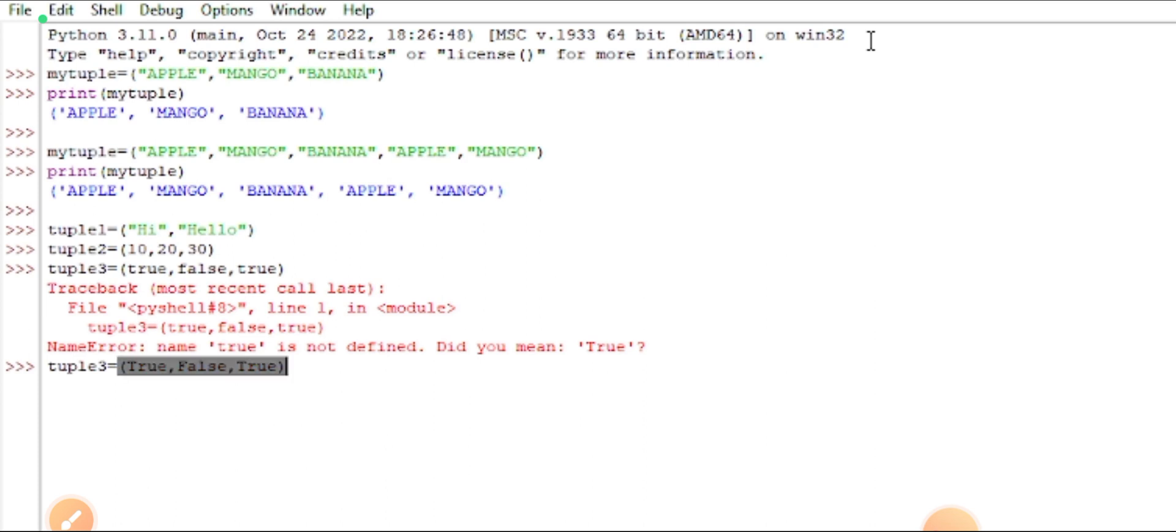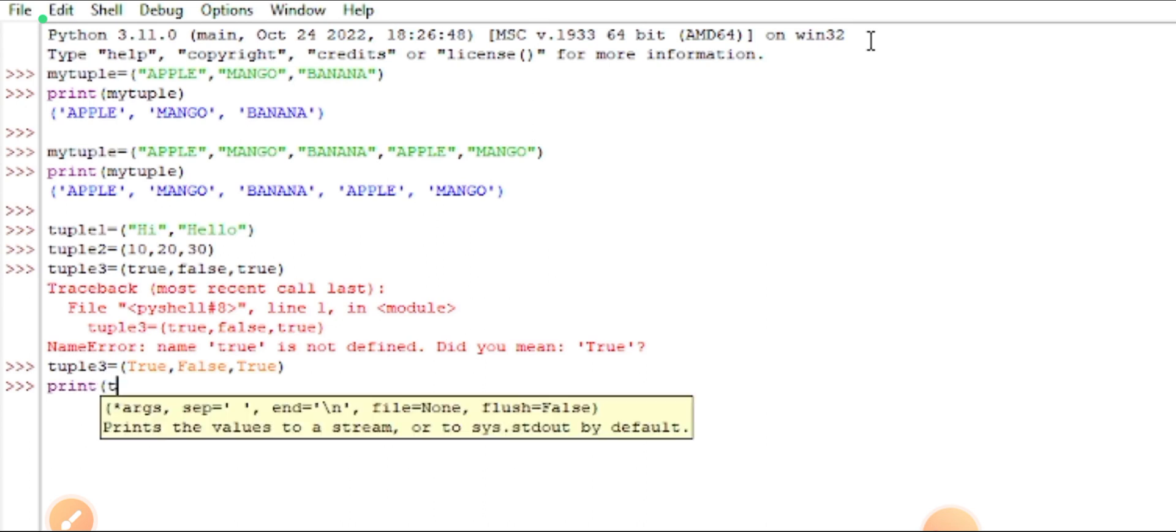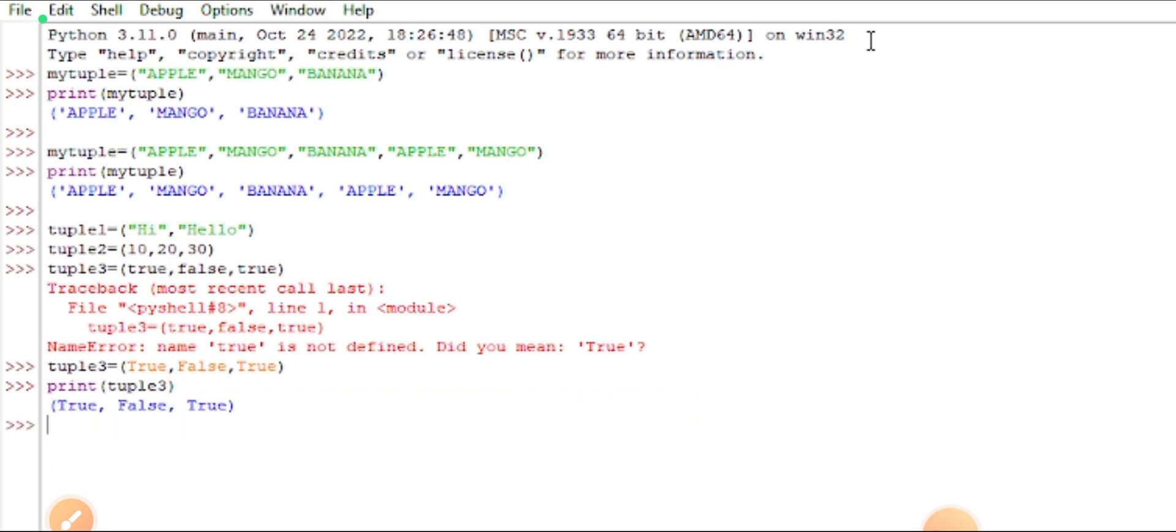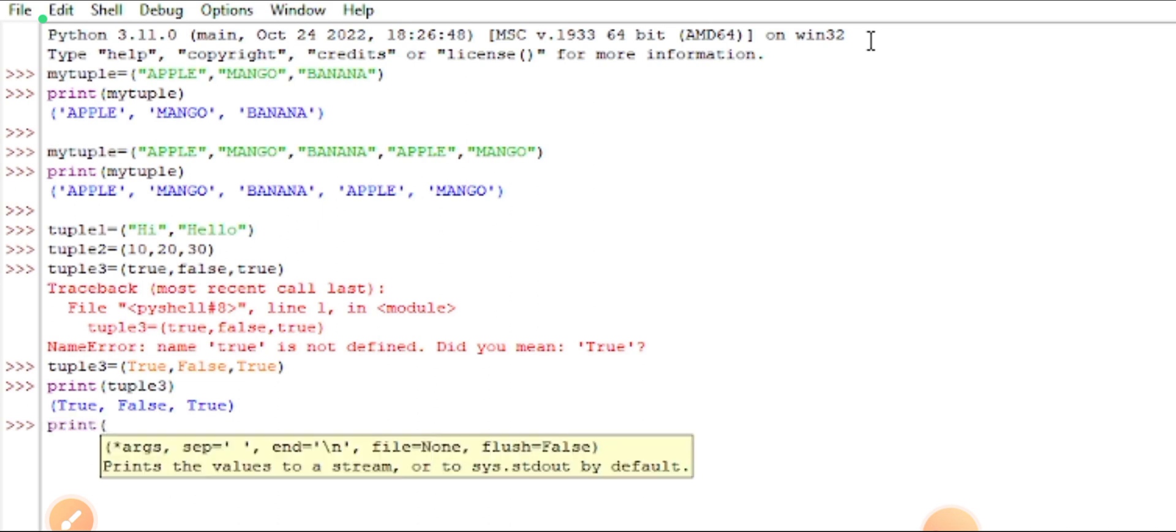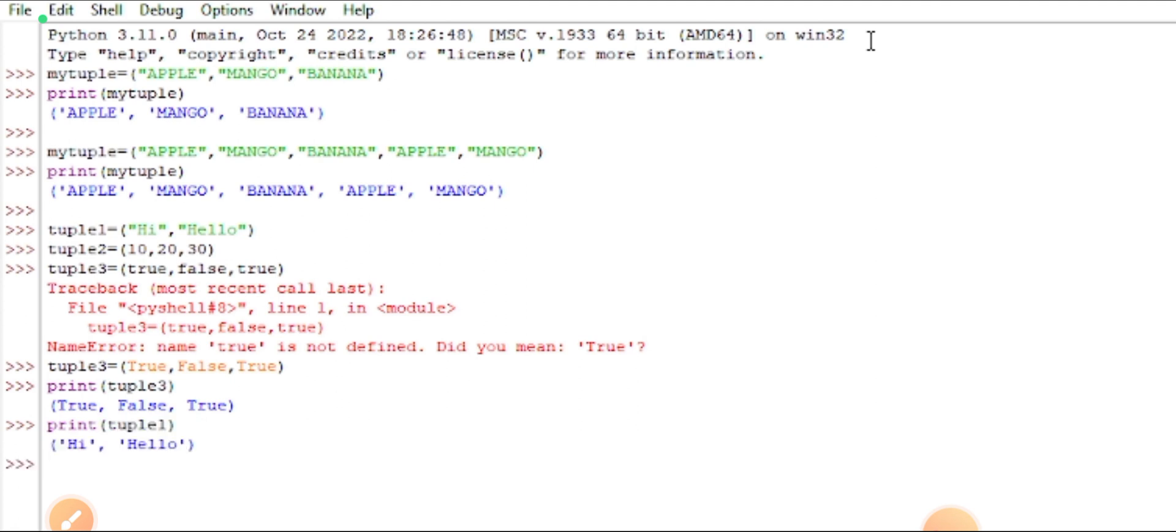Yes, it is accepted. So now I want to print all the different data types: tuple1, tuple2, tuple3. Let us see what are those. Yes, tuple1: hi, hello, and remaining one is tuple2 which is integer data type.